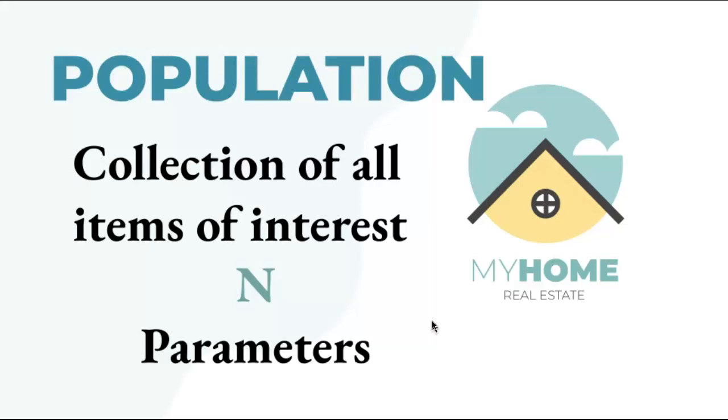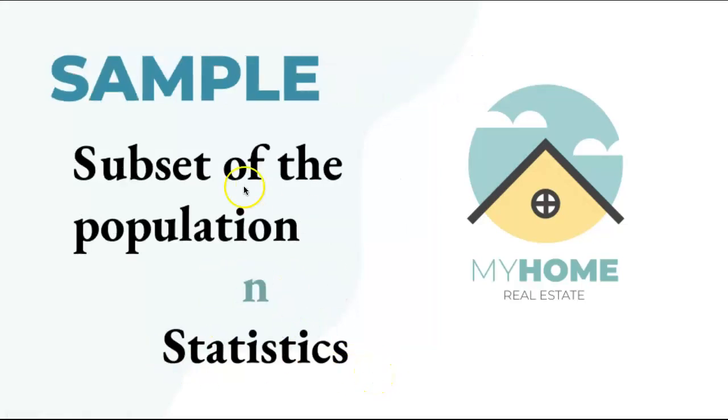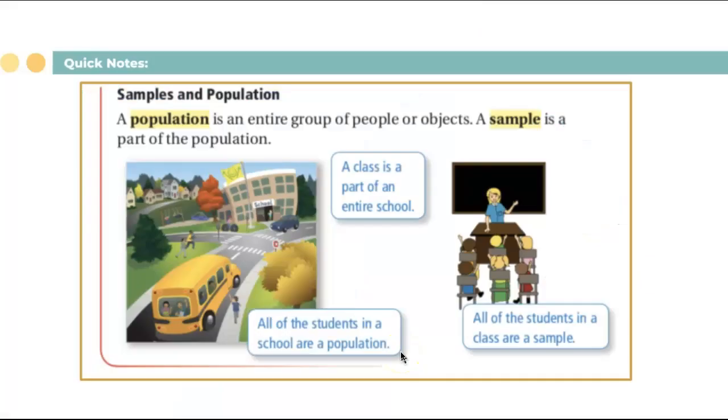So today we're working on data, which one could be the population and which one could be a sample data. Population is a collection of all the items of interest and we usually represent it as capital N, and that will be our parameters. On the other hand, sample is a subset of the population. We represent it with small n, and that's where statistical data comes in.